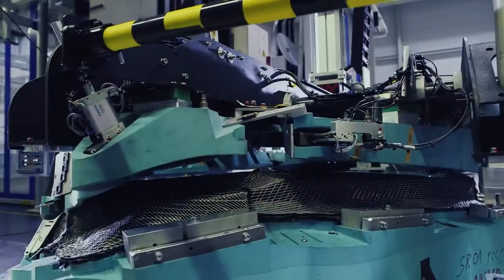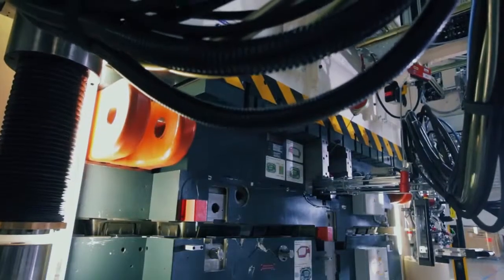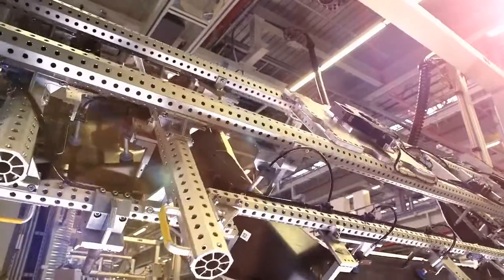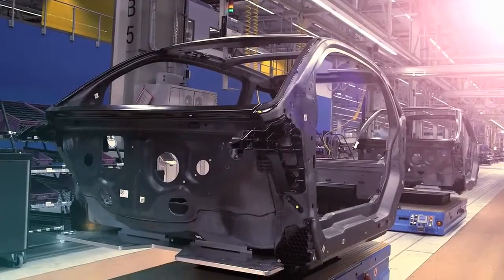BMW i is setting new standards by producing a carbon fiber passenger cell in series. To manufacture this protective passenger cell out of carbon fiber, it takes a lot of steps.